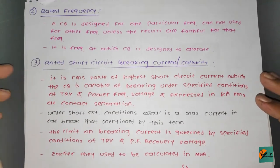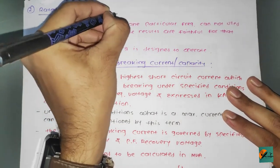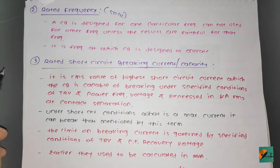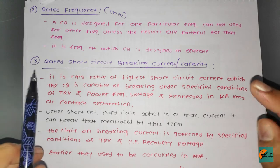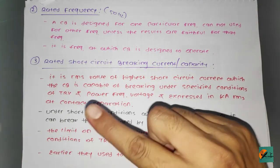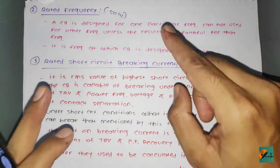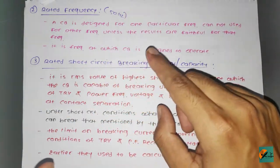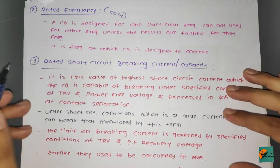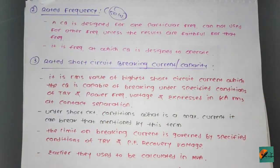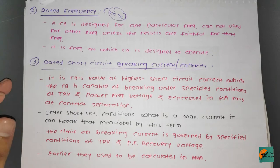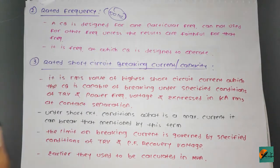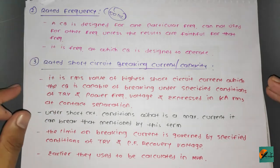The second rating is rated frequency. In India, 50 Hz frequency is used. A circuit breaker is designed for one particular frequency and cannot be used for another frequency unless results are verified for that frequency. So the design of any circuit breaker used in India is made according to 50 Hz.